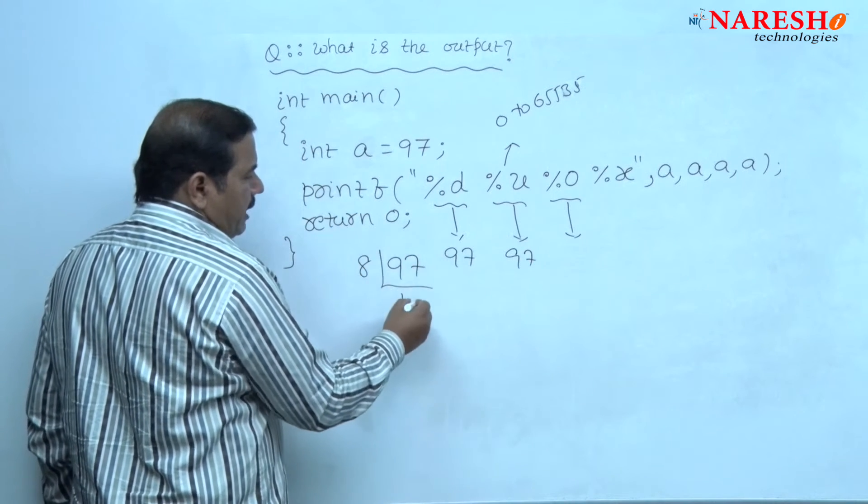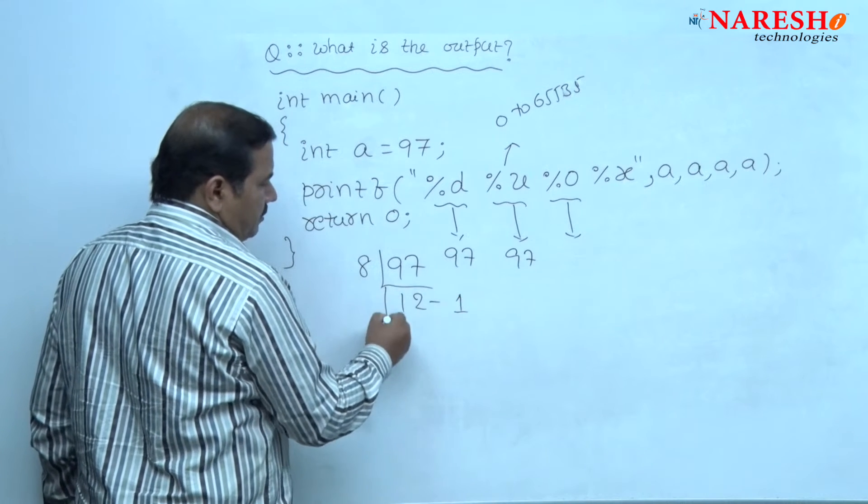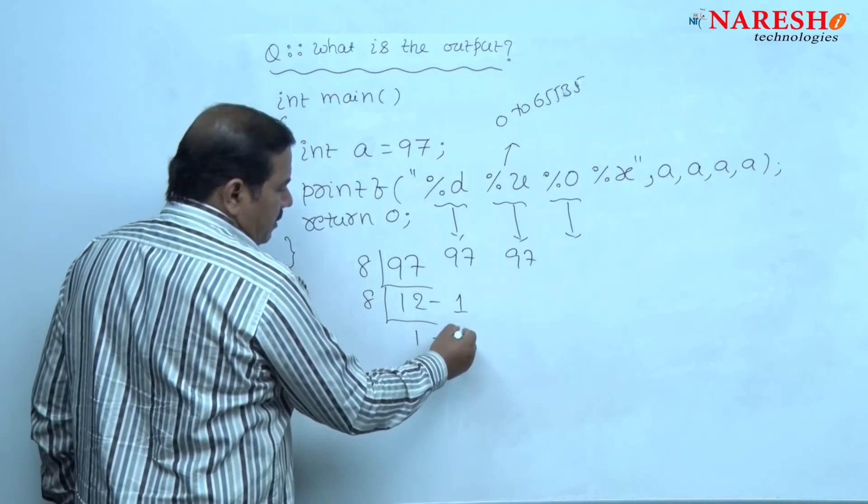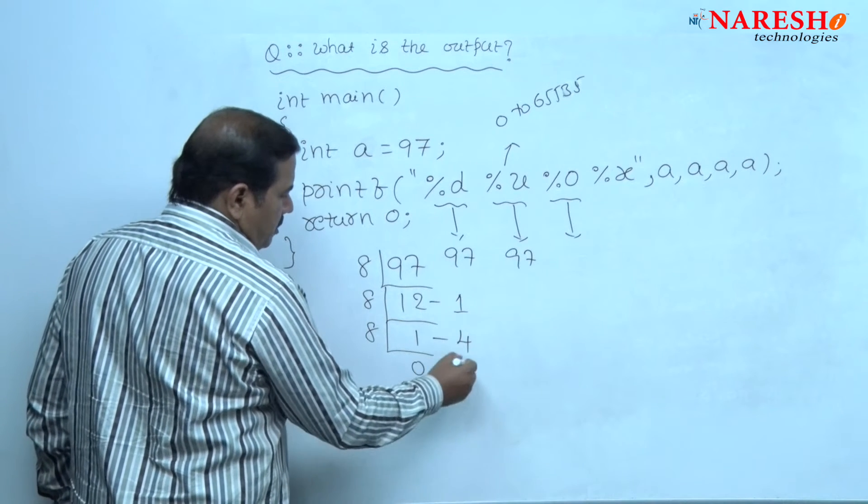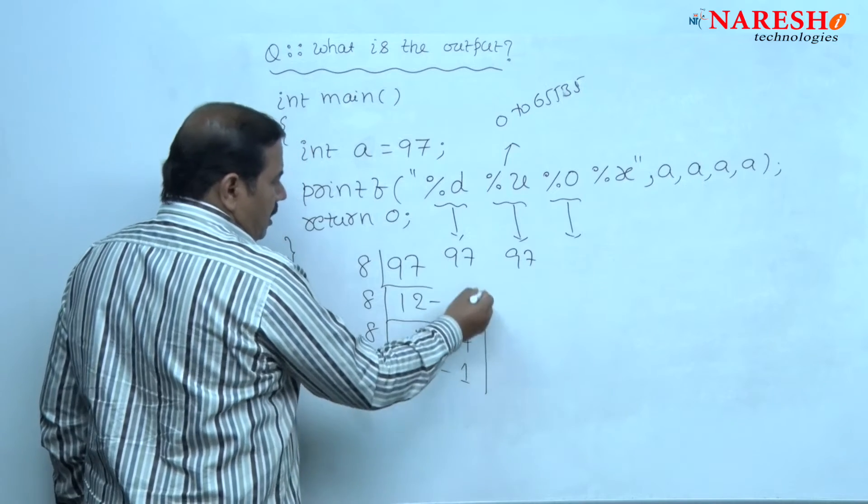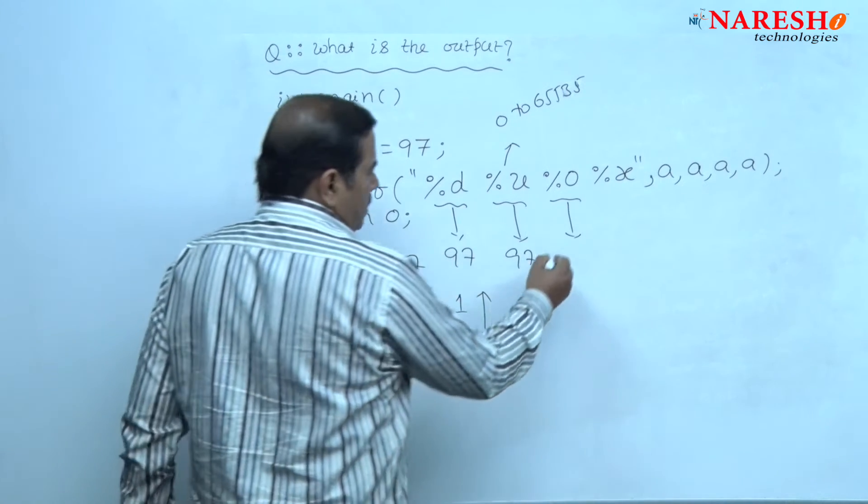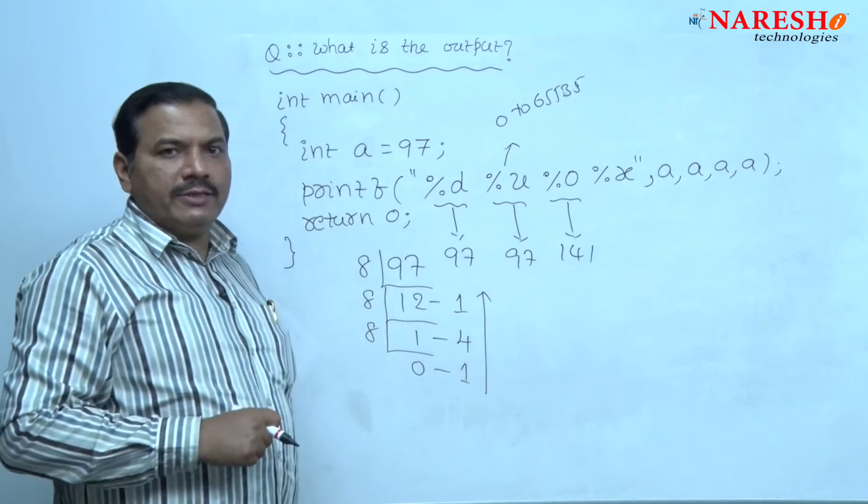8 times 12 is 96, remainder is 1. 8 times 1 is 8, remainder is 4. 8 times 0 is 0, remainder is 1. Write down all these remainders from bottom to top: 141. 141 is the octal equivalent of this decimal number 97.